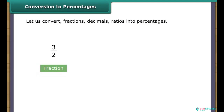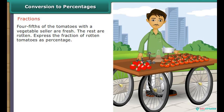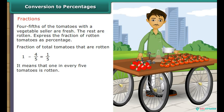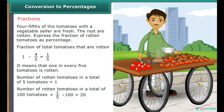We have learned to express numbers as percentages. Let us now learn to convert fractions, decimals, and ratios into percentages. 4/5 of the tomatoes in a vegetable cellar are fresh; the rest are rotten. Express the fraction of rotten tomatoes as a percentage. Fraction rotten equals 1 minus 4/5, which equals 1/5. Number of rotten tomatoes in 100 equals 1 upon 5 into 100, which equals 20. Therefore, 20% of the total tomatoes are rotten.